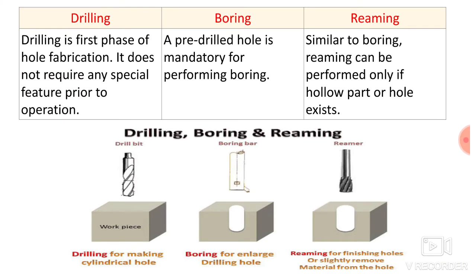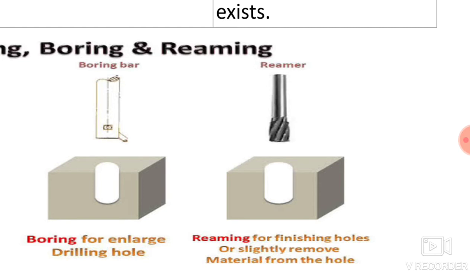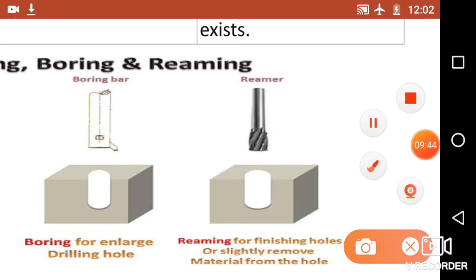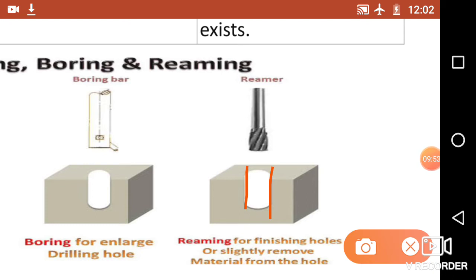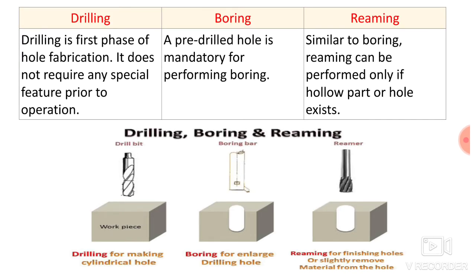Similar to boring, reaming can be performed only if a hollow part or hole exists. The boring and reaming operations are quite similar because you should have a previously drilled hole first — then and only then you can perform either boring or reaming. Boring is used for enlarging the diameter whereas reaming is used for finishing the hole. Very less material is removed along the periphery during reaming, but the condition is there must be a previously drilled hole first.